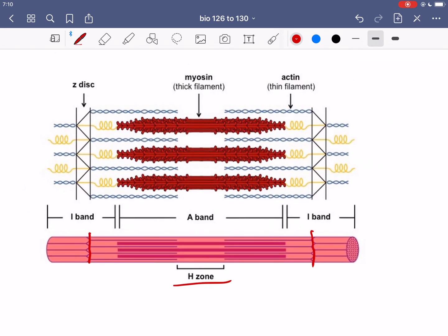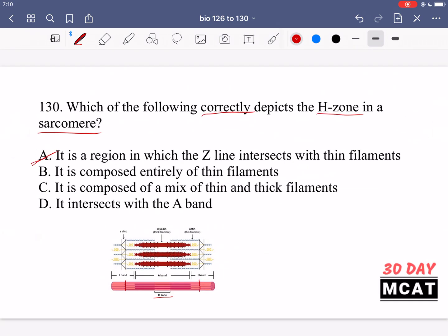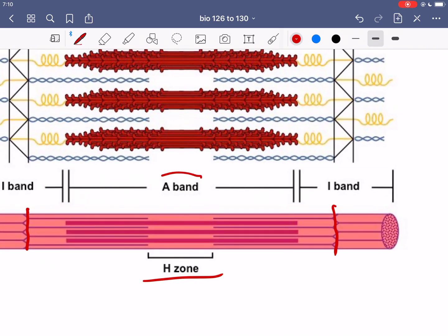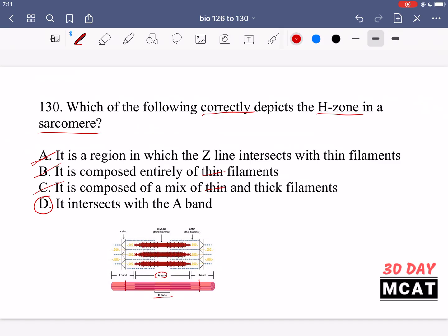B is saying it is composed entirely of thin filaments. Going back here you can see there are thick myosin filaments and thin actin filaments. Zooming in over here, the thinner lines are the thin filaments. The H zone is actually the part where we only have thick filament, so it's the opposite. It's not where we only have thin filaments, it's where we only have thick filaments. So B is incorrect. C is saying it is composed of a mix of thin and thick, but no, we only have thick, not thin. Therefore D is correct. It's saying it intersects with the A band. Going back one last time, you can see over here the A band is going throughout the entirety of where the thick filaments are, and the H zone is within that. It's a part that's only thick filament and not thin filament. So yes, the H zone is inside the A band, so we can say it does intersect with the A band. D is correct.